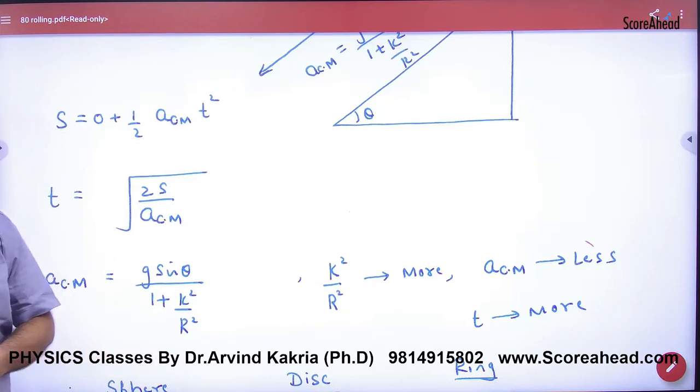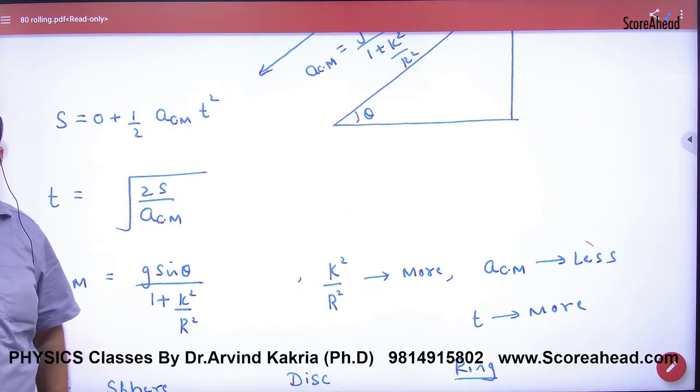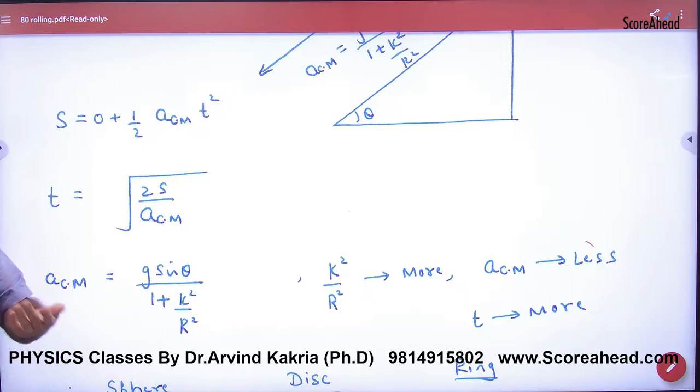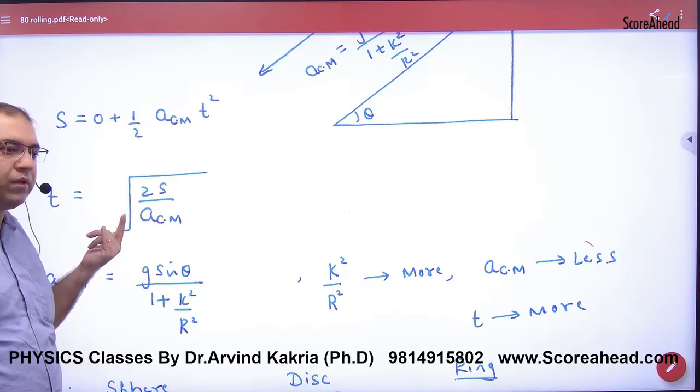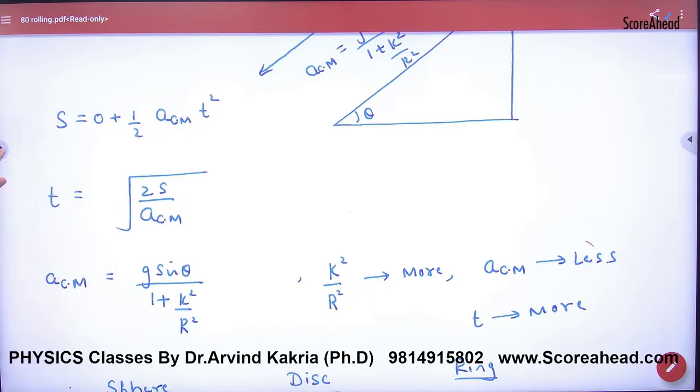So what happens depends on the acceleration at the center of mass. The acceleration of the center of mass will be reduced, or you can say the acceleration will be reduced. The acceleration in rolling motion. You are seeing this formula for acceleration. Look at that. Rolling motion acceleration.